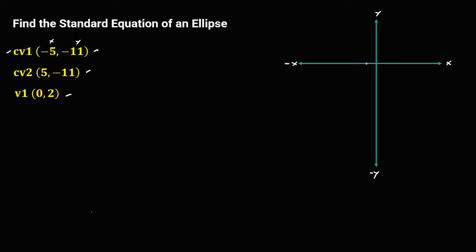For the first co-vertex, x is negative 5 and y is negative 11. Counting to negative 5 on the x-axis and down to negative 11 on the y-axis, this gives us the coordinate of the first co-vertex at (-5, -11).